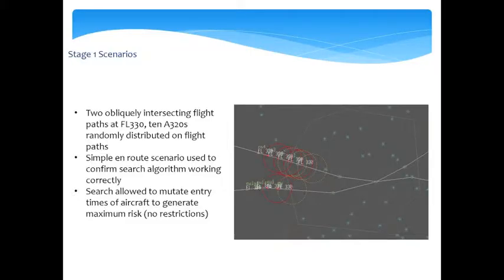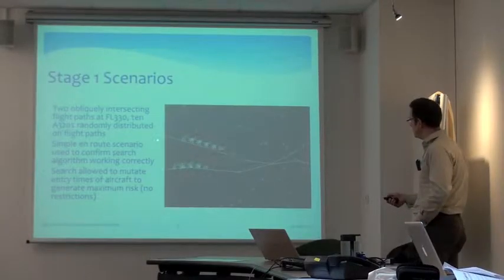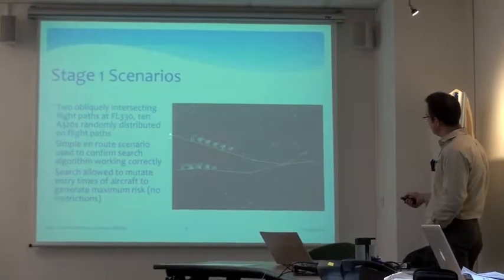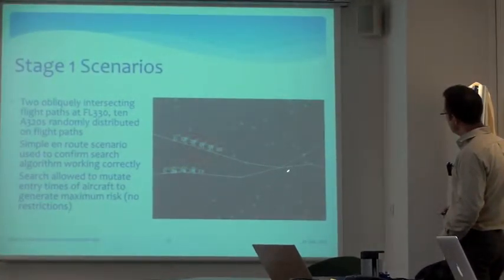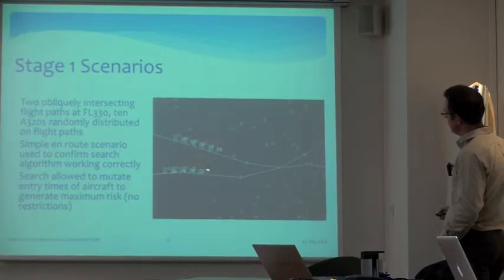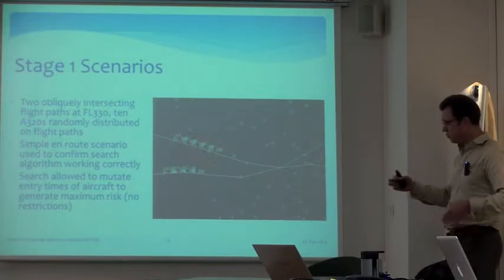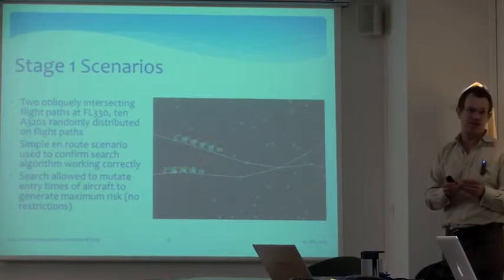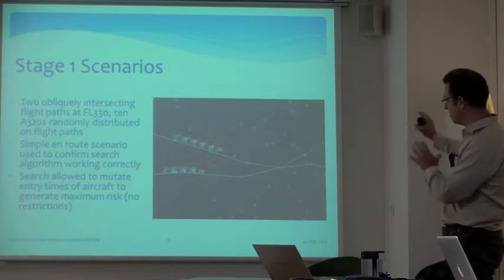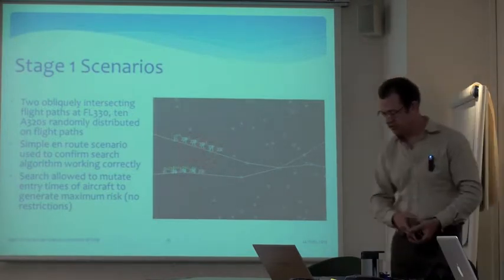Early in the project we needed to test that the search algorithms were working, so we created a very simple scenario: two flight paths — one broadly running north-south and another east-west — converging obliquely, both initially at FL330. We just wanted to test that the search outcome would bunch the aircraft up to create maximum disruption and maximum workload for an air traffic controller. This was not a realistic scenario, just a check that the search worked correctly.